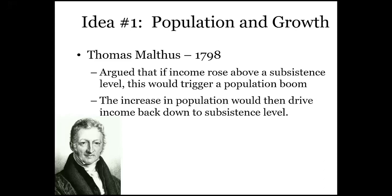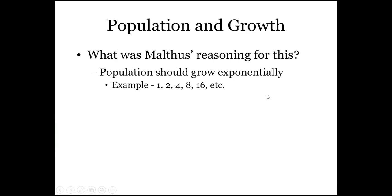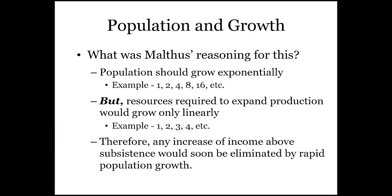Malthus is writing around 1798, at the very beginning of the hockey stick of economic growth, so he doesn't have the benefit of hindsight. His basic idea: humans are at subsistence for a long time, and the moment income rises above subsistence, population increases. Babies happen — and then an increase in population drives income back down to subsistence, because babies eat things and consume resources.